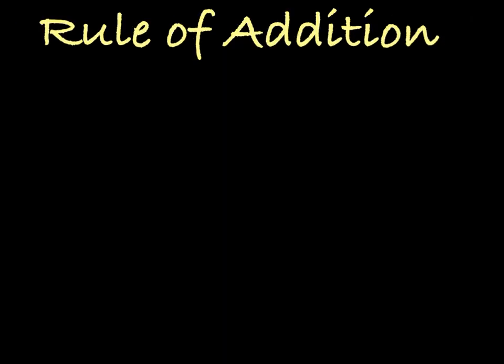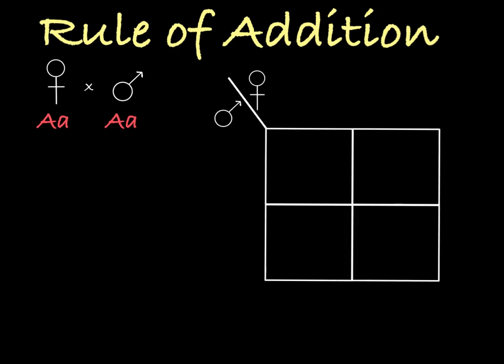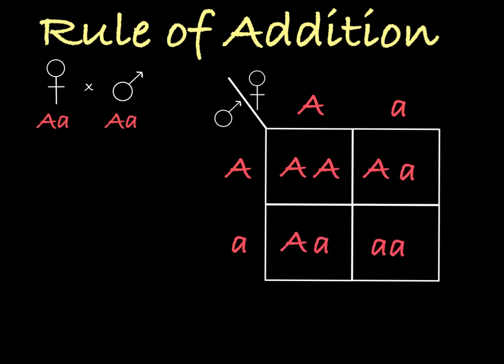So let's say you have two parents that want to know the probability of their child having cystic fibrosis. Both parents are heterozygous, meaning they each are carriers for the cystic fibrosis little a allele. You create a Punnett square with the possible gametes of the parents at the head of the columns and rows. Here are the father's possible sperm and here are the mother's possible eggs. You can see that they both could give their big A allele or their little a allele to their child. So we fill in the boxes and see all of the possible genotype combinations for the child.